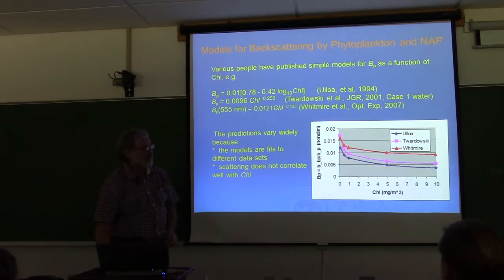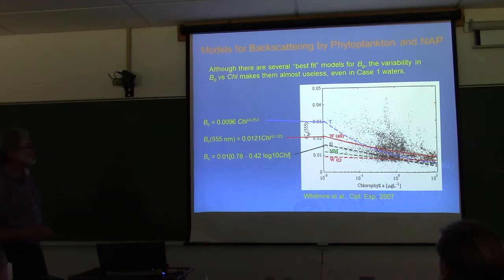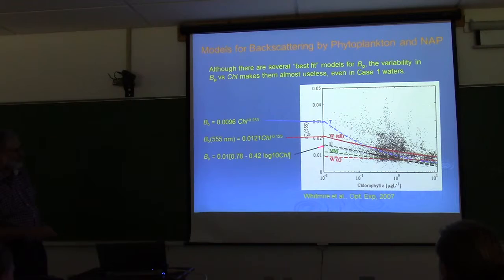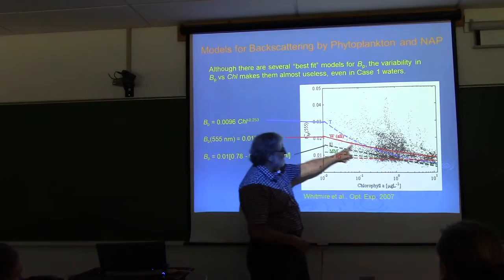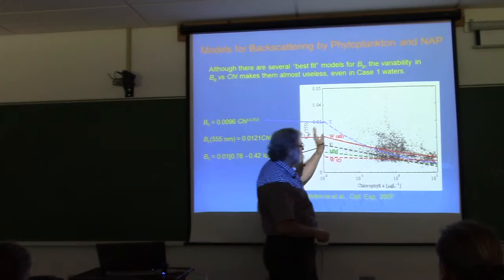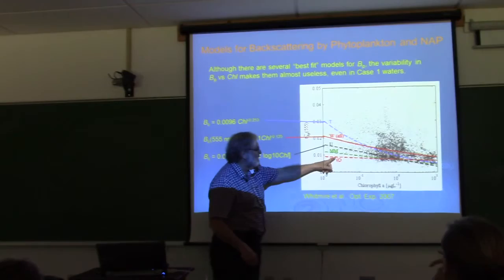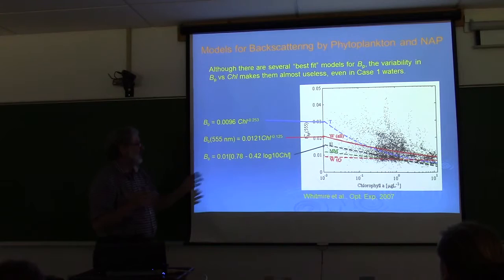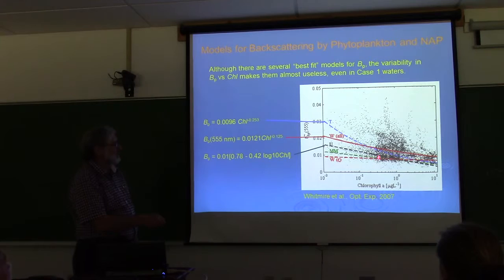When you plug the same chlorophyll value into these best-fit functions you find factors-of-two differences between them. Looking at a plot of backscatter fraction versus chlorophyll for a large compilation of data, it's all over the place — a cloud of points. I'd submit that claiming any of these curves is a good fit to that cloud requires lower standards than I have. What you're really seeing is different sizes and shapes of particles giving a factor of three or four difference in the backscatter coefficient for the same chlorophyll.